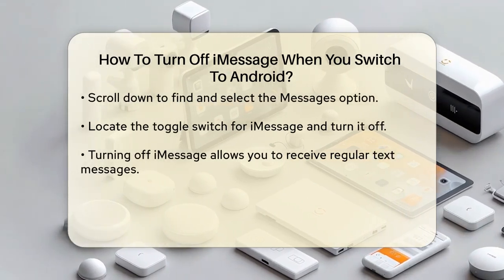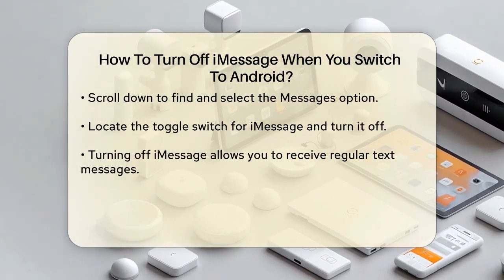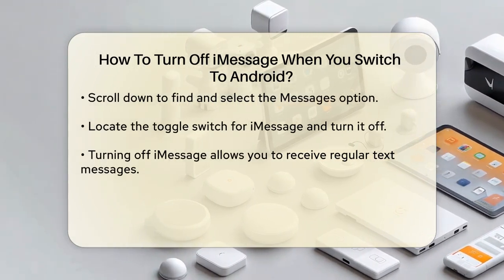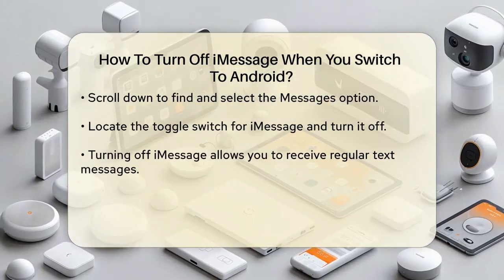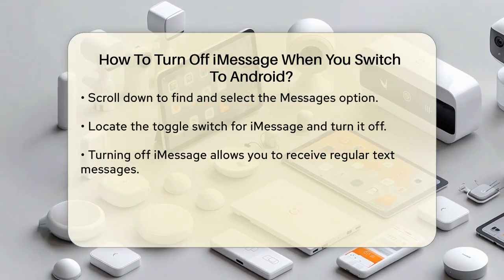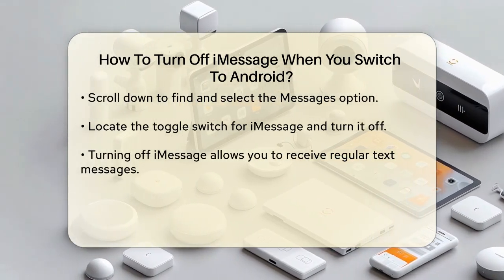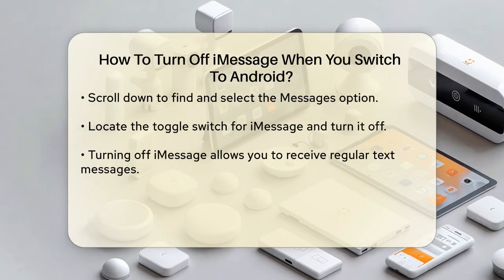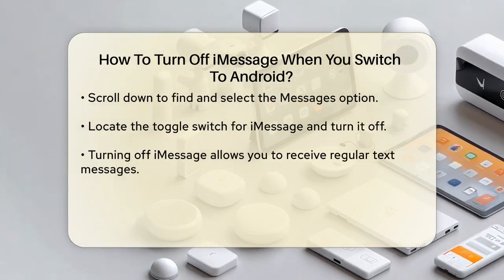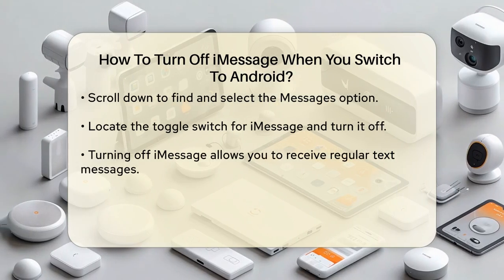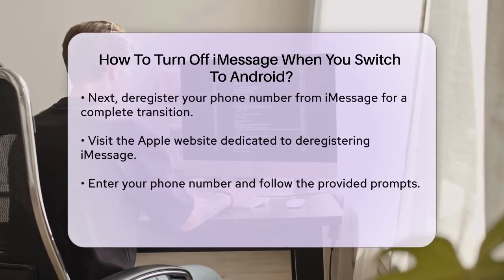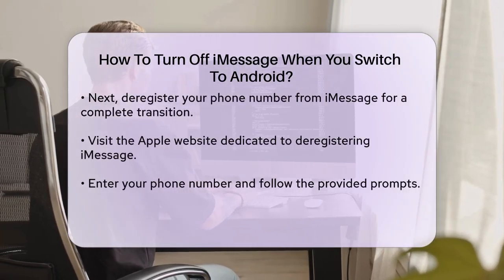First, you will need to access your Apple device. Open the Settings application on your iPhone. Scroll down and select the Messages option. Here, you will find a toggle switch for iMessages. Simply turn this switch off. This action will deactivate iMessages on your device, allowing you to receive regular text messages instead.